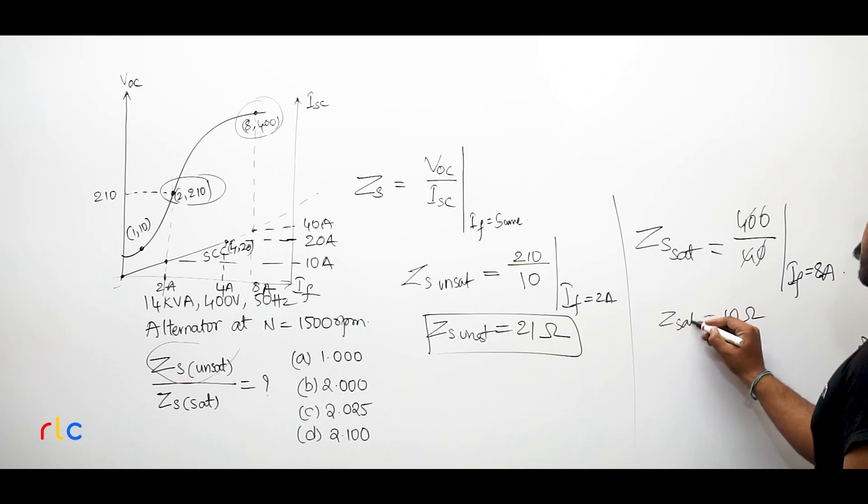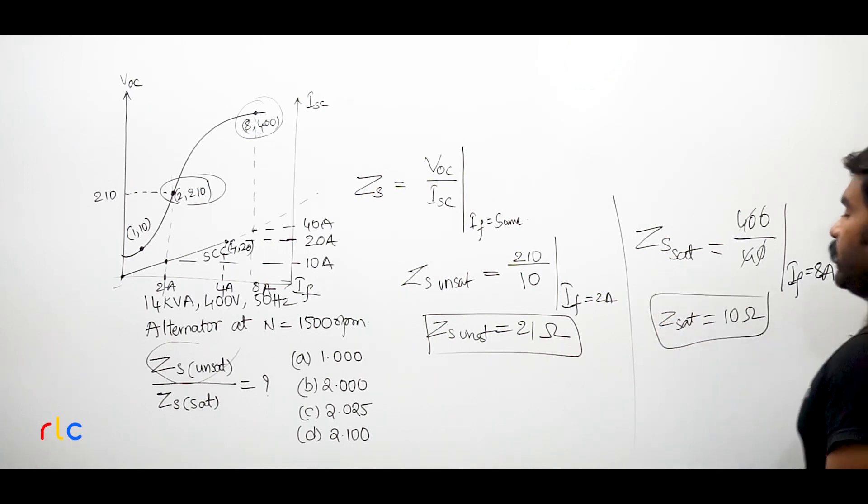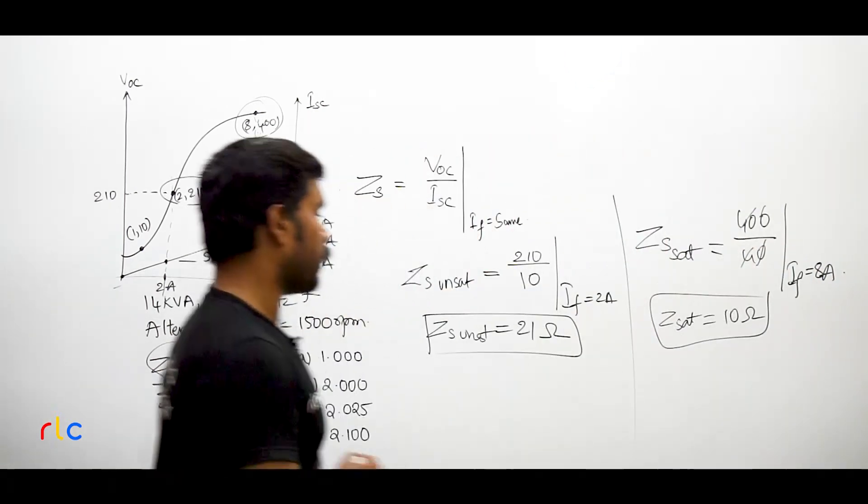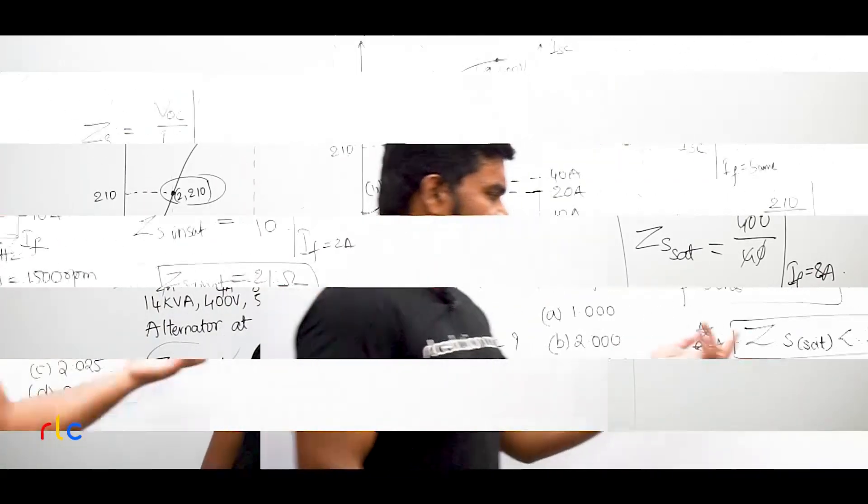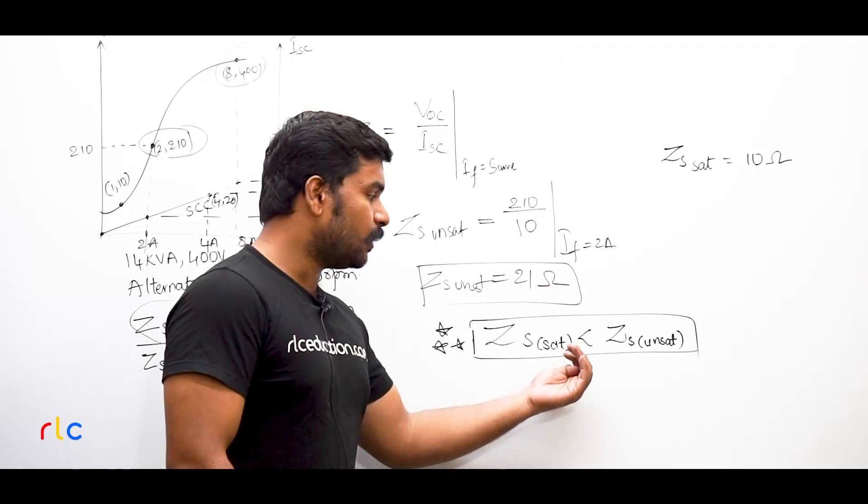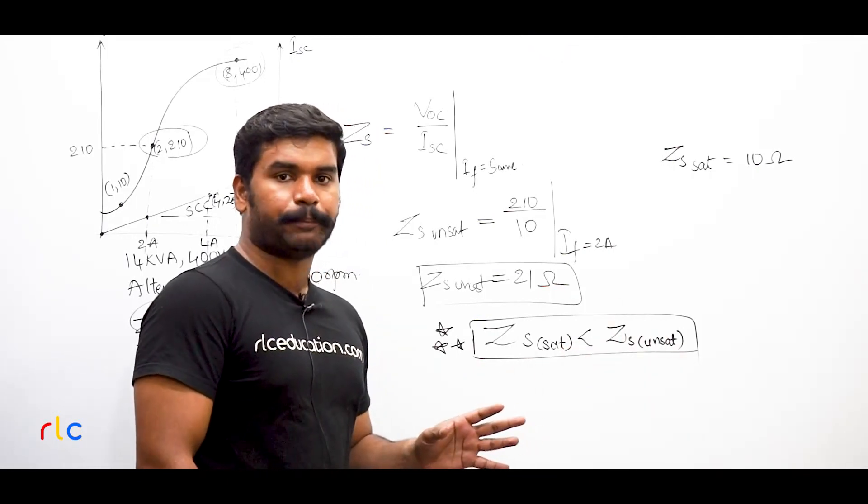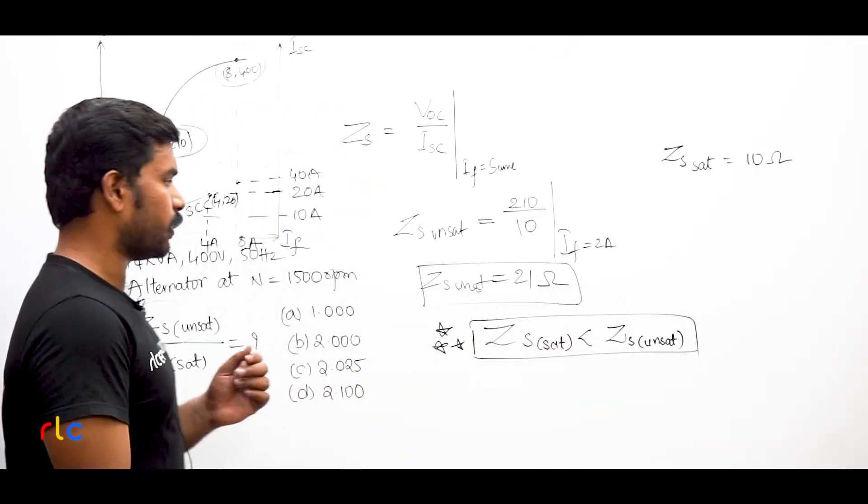Zs saturated would be how much? 10 Ohms. See, very very important observation here: always, always for synchronous machine like this, Zs saturated will be less than the unsaturated synchronous impedance. This is a very important observation.